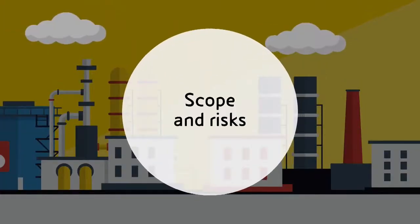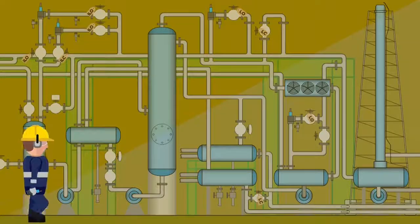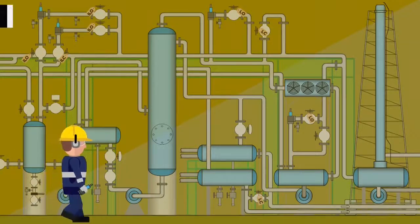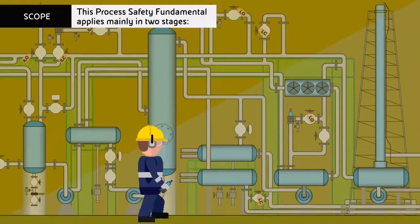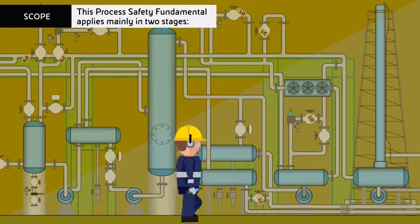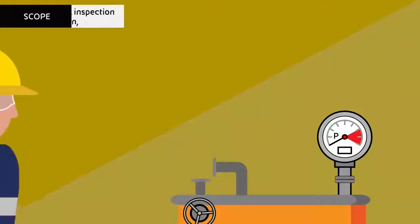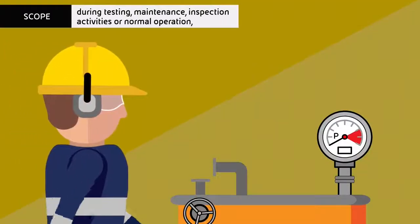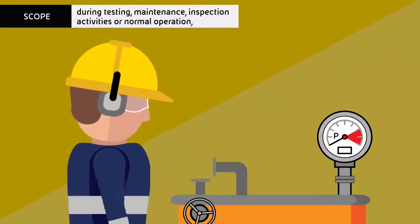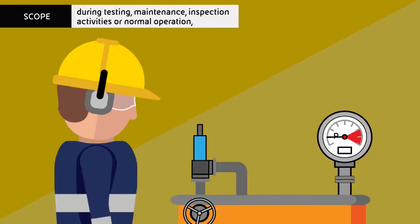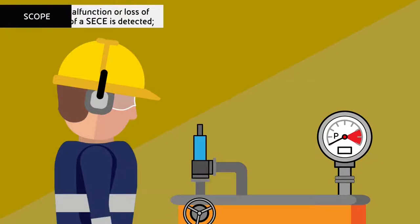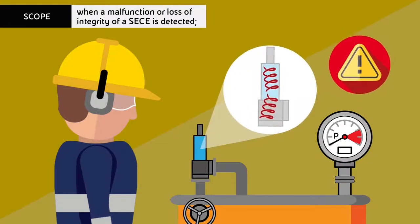Scope and Risks. This process safety fundamental applies mainly in two stages: during testing, maintenance, inspection activities or normal operation, when a malfunction or loss of integrity of a CC is detected.